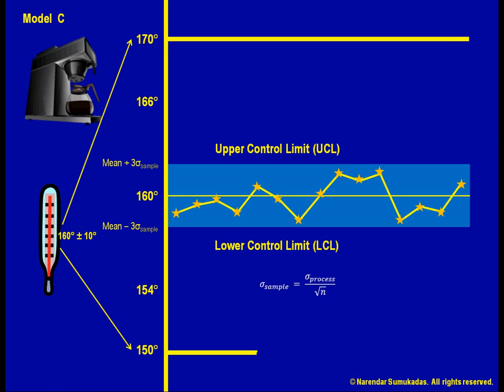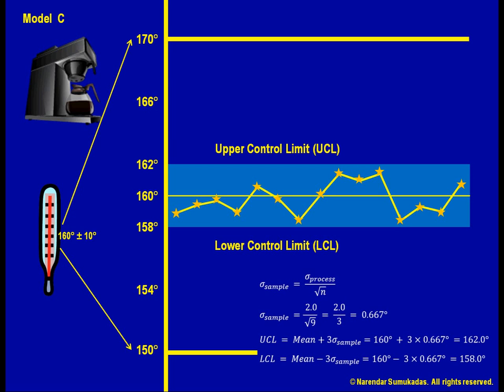Since I am using a sample size of nine observations, I can calculate sigma sample to be 2 degrees divided by square root of 9, which comes to 0.667 degree. Therefore, my UCL and LCL will be 162 degrees and 158 degrees, not 166 and 154 as I had originally calculated. Notice that these upper and lower control limits are also not the same as the upper and lower specifications of 170 degrees and 150 degrees.